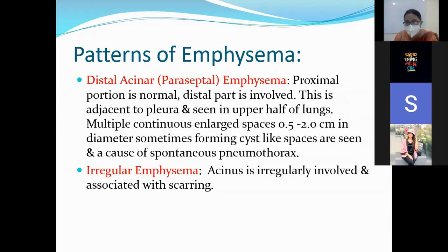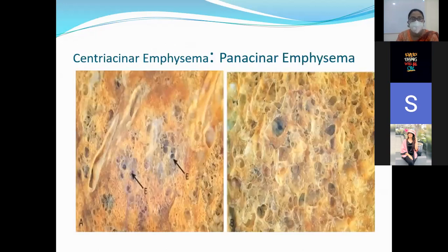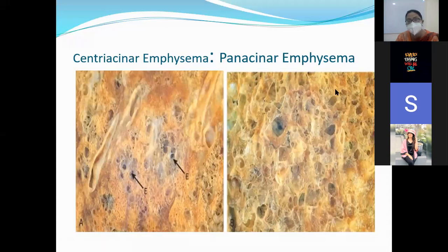Irregular emphysema, as the name indicates, is an irregular type in which the acinus is irregular and associated with scarring. This image of a lung shows marked emphysematous changes in the central part, while the surrounding periphery is spared — the acinus is normal. In the panacenar type, the entire pulmonary lobule is involved.